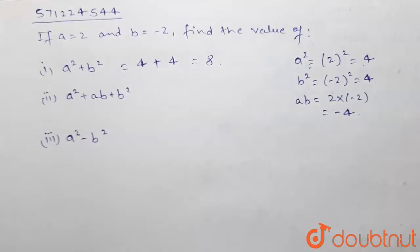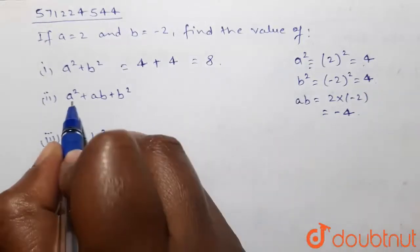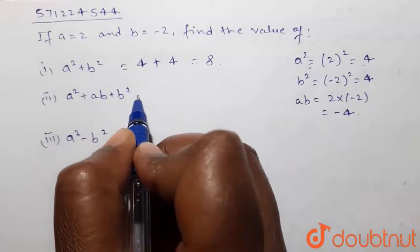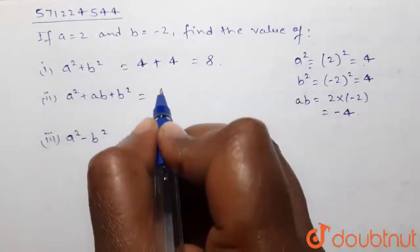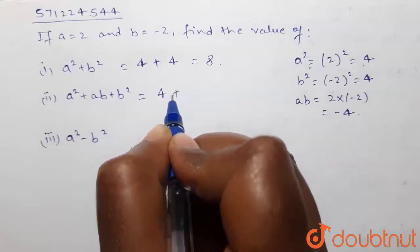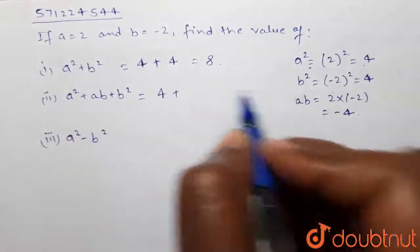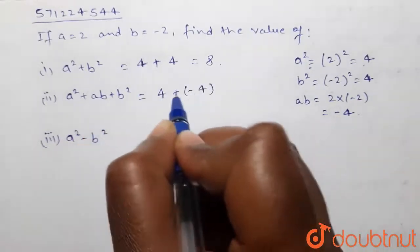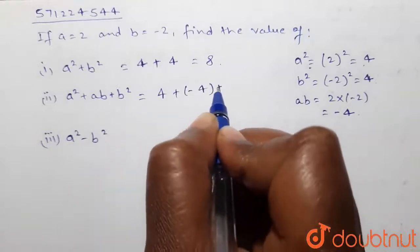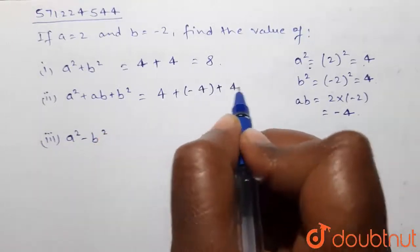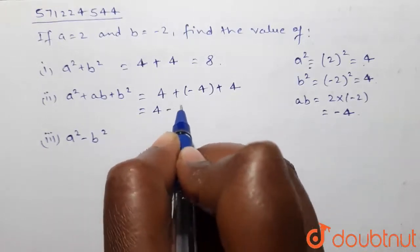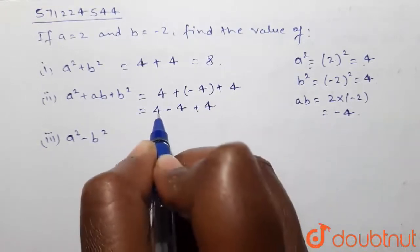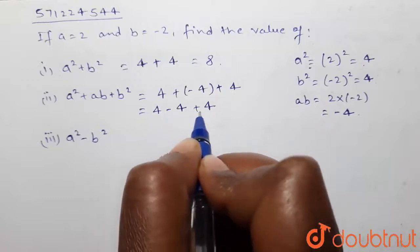Now in the second part we have to find the value of a² + ab + b², which will be equal to a² that is 4, plus ab value of ab is -4, then plus value of b² that is 4. Now it will be equal to 4 + (-4) + 4. Now 4 - 4 is 0, 0 + 4 is equal to 4.